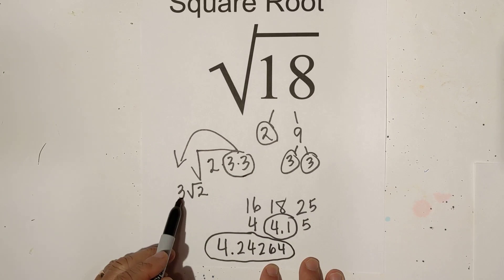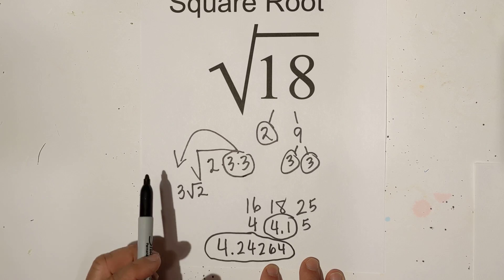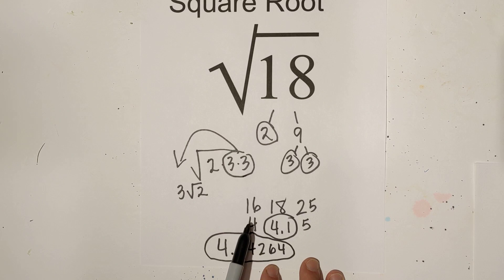In summary: simplified, it's 3 square root 2. You can estimate it—you have 4 on one side, 5 on the other, and it's closer to 16, so 4.1 or 4.2. In decimal form to 5 places, it's 4.24264.